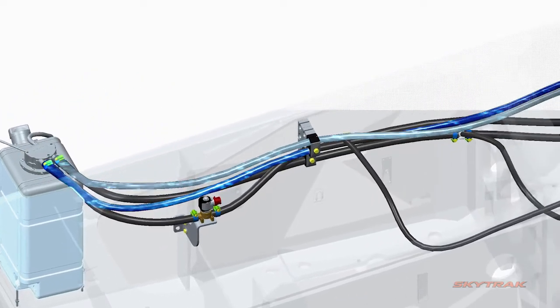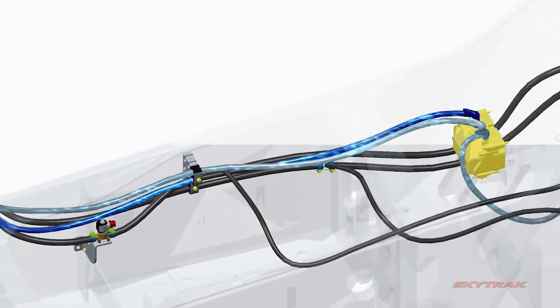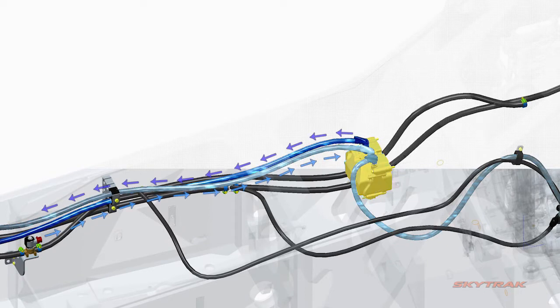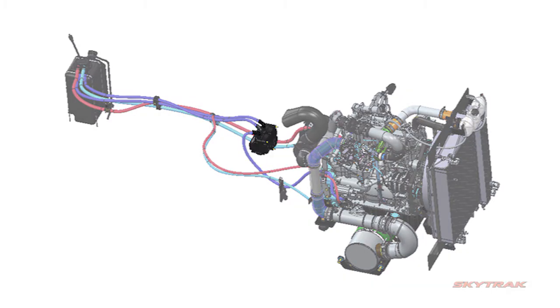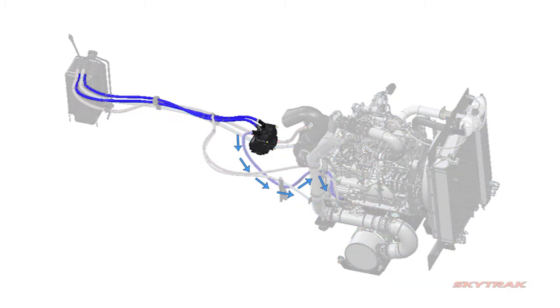DEF is pulled through the header from the tank by the DEF pump for injection into the exhaust via a DEF injector. The DEF pump generates a continuous flow of DEF to ensure the injector always has a pressurized supply. Only a portion of the DEF circulated is pressurized for injection; excess DEF is returned to the tank for recirculation.